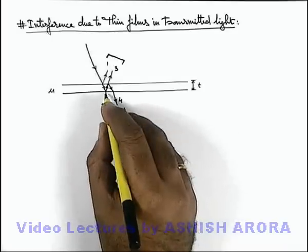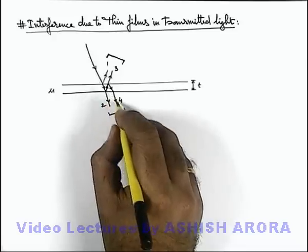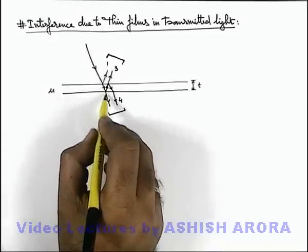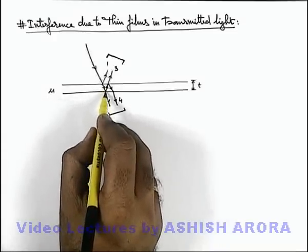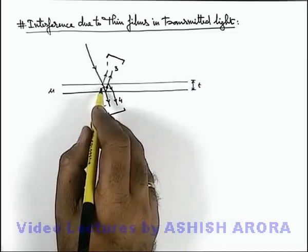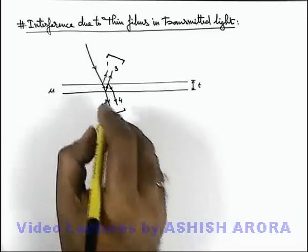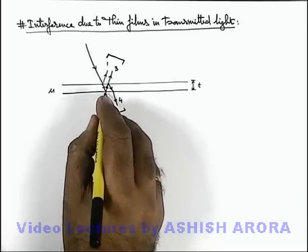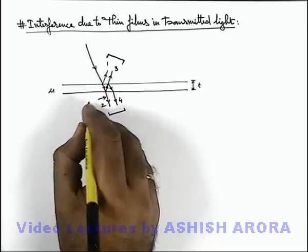Here if we talk about the path travelled by the beam 2 and 4 for analyzing the interference effect, here we can see that the light beam 2 is coming out after travelling a thickness t in the refractive index μ. So the optical equivalent path which is added in the beam 2 will be μt.